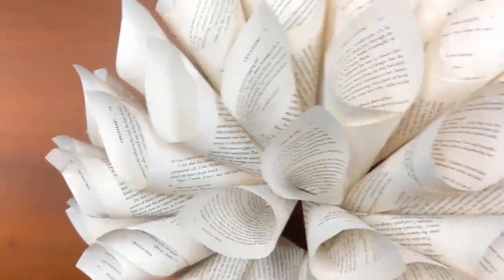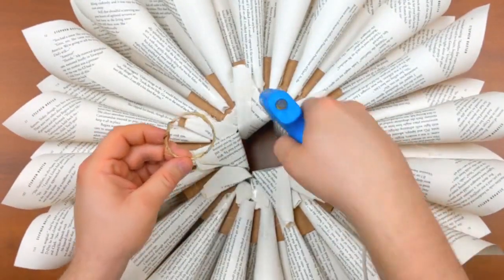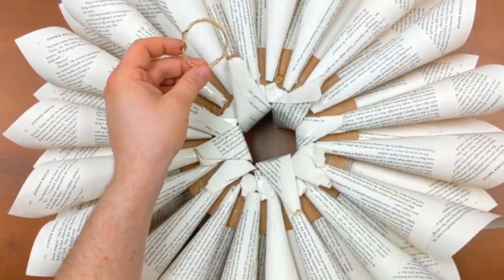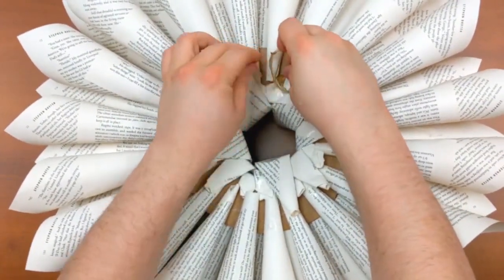So we're going to flip this over and get on the back and make sure you look at the front to figure out which side you want to be the top. And then we're just going to take a little piece of rope or string and we're just going to be gluing it to the back to serve as the hook.